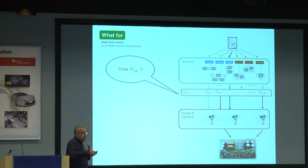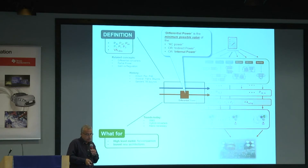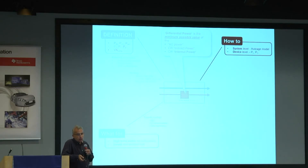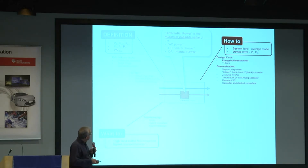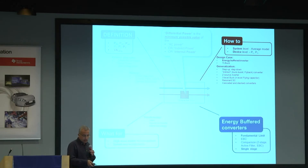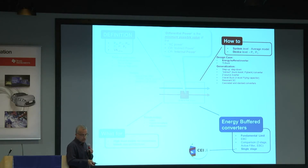Every time we see a new converter design, we try to think about the real power processed by the components, not just the nominal power. The next step is to understand the impact — if there is an automatic relationship from those powers to the real product, you can save part of the optimization process. The key question is how to calculate the power processed by the components, and what is really interesting is to calculate that power at system level, even without knowing the specific circuit inside the building blocks. We are going to focus on the energy buffer converter, calculate the limits, compare different architectures, and show our prototype — though we have only partial results.